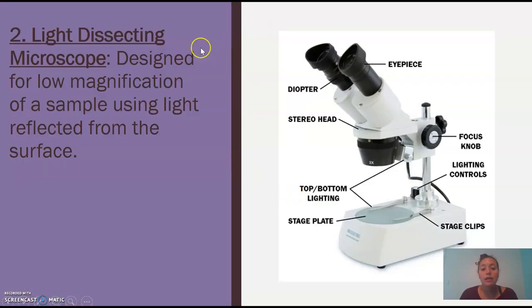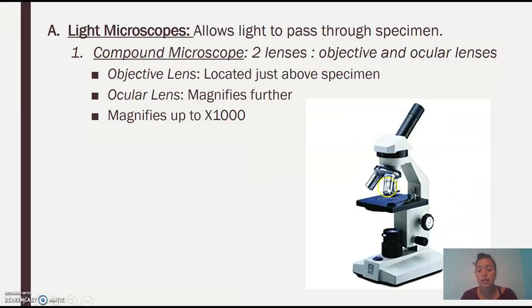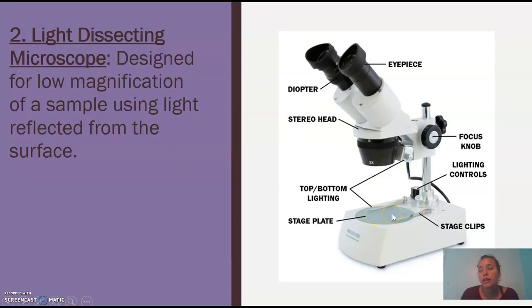The second one is called a dissecting microscope. Still uses light. The difference is it's going to be less magnification. So this would be like you're trying to look at a leaf, not the cells of a leaf. So this would be like your cells. Like, you want to see what your cell looks like. This would be like you just want to see the basic part of a leaf. Like, you just want to see the vascular structures of the leaf, the outside of the leaf. Maybe you want to see a water droplet. So this would be bigger. So designed for low magnification.